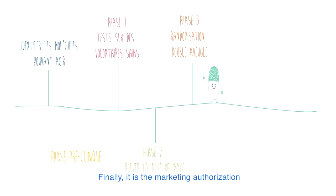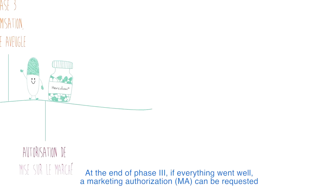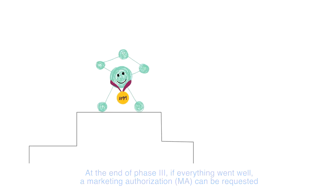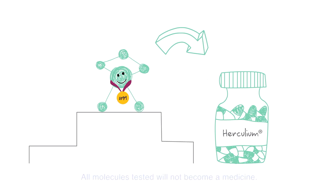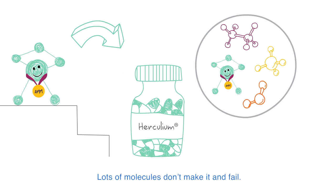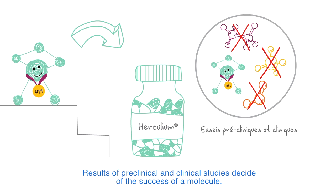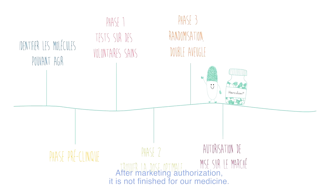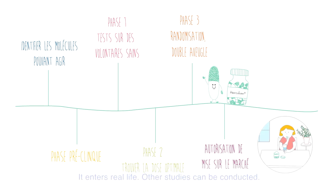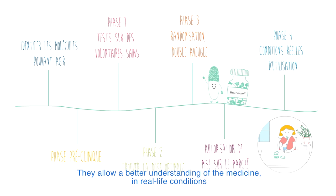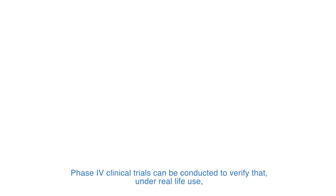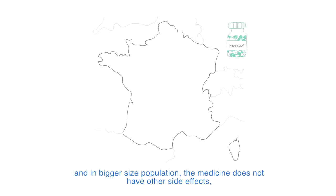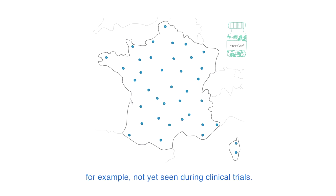Finally, it is the marketing authorization. At the end of phase 3, if everything went well, a marketing authorization (MA) can be requested. At any time during the development of a medicine, everything can be stopped because of safety issues or the inefficiency of the drug — all molecules tested will not become a medicine, and lots of molecules don't make it and fail. Results of preclinical and clinical studies decide the success of a molecule. After marketing authorization, it is not finished for our medicine — it enters real life. Other studies can be conducted, called phase 4 studies. They allow a better understanding of the medicine in real-life conditions, including a better understanding of its safety. Phase 4 clinical trials can verify that under real-life use, and in a bigger population, the medicine does not have other side effects not yet seen during clinical trials. This is why sometimes a medicine can be retrieved from the market after a certain time in use.